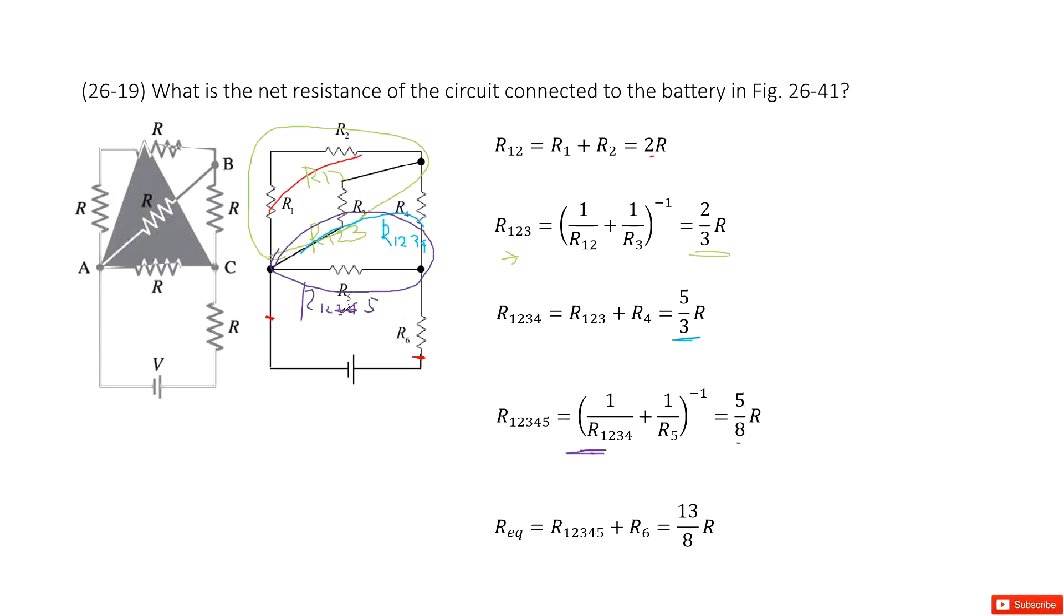we want to find the resistance. R12345 with R6. So this is just as a series connection. So you add them together. And then you get the final equivalent resistance as 13R over 8. Thank you.